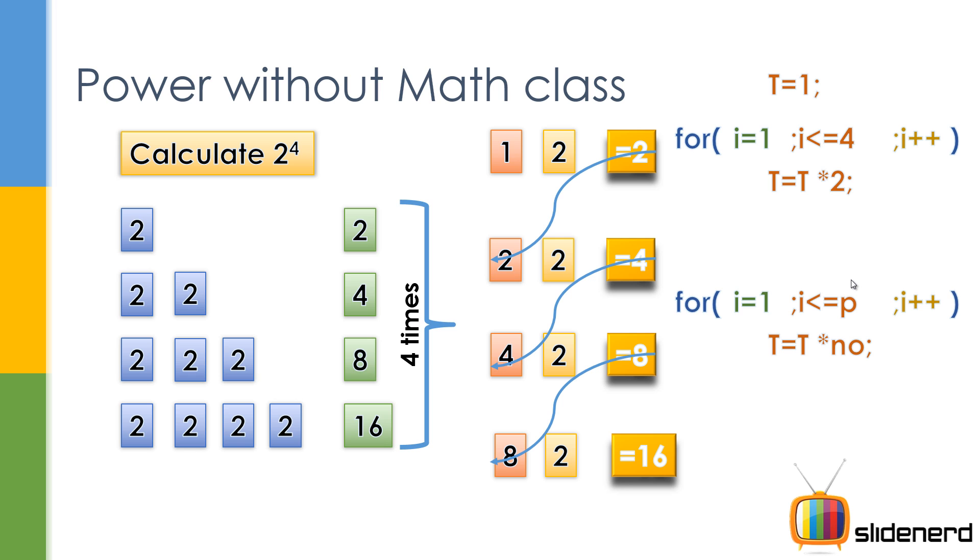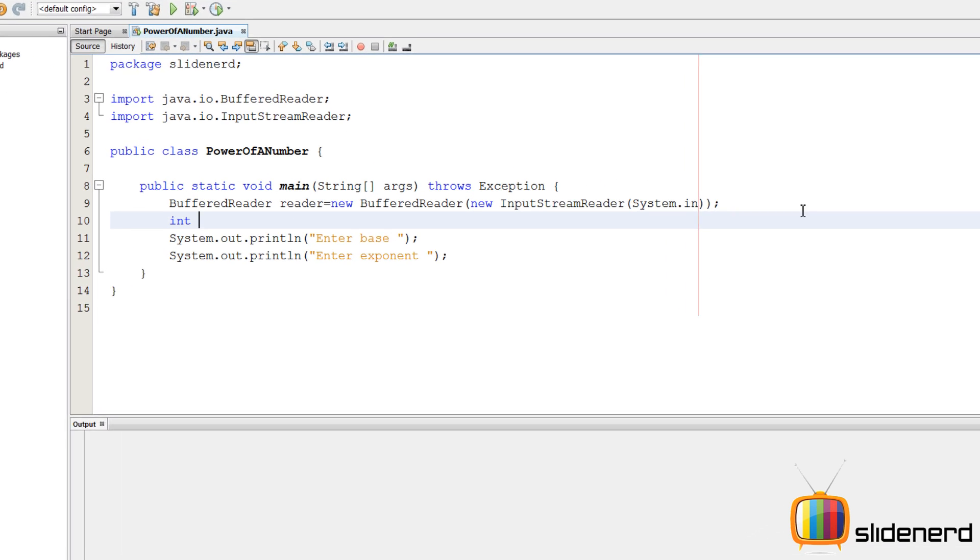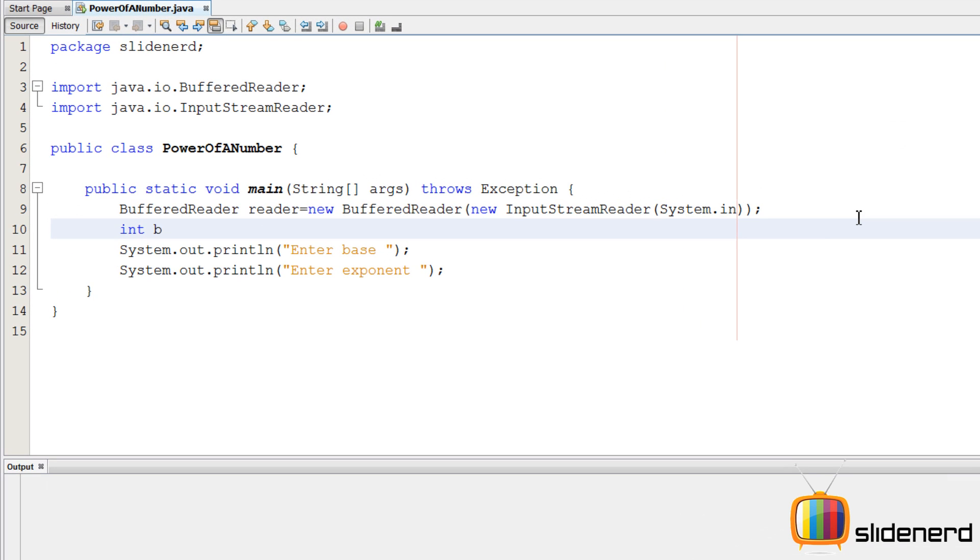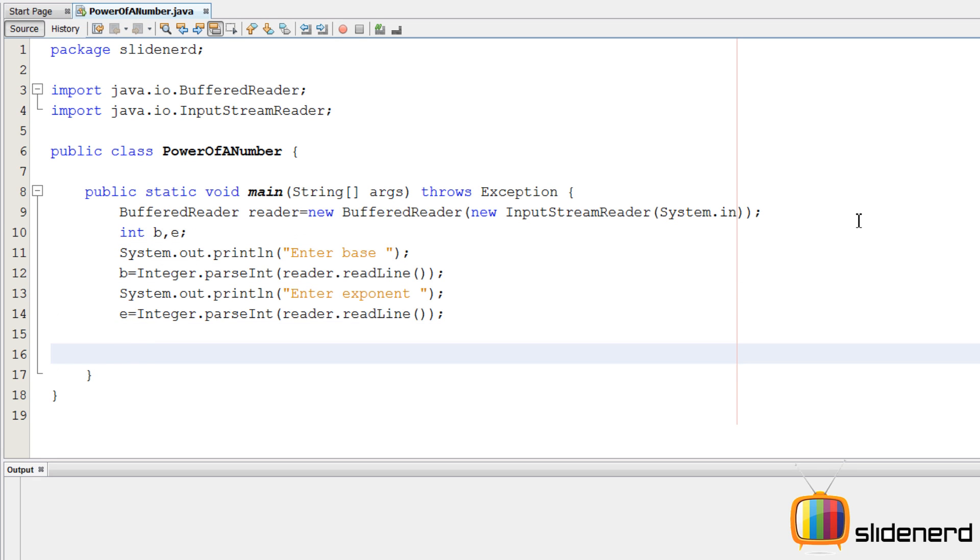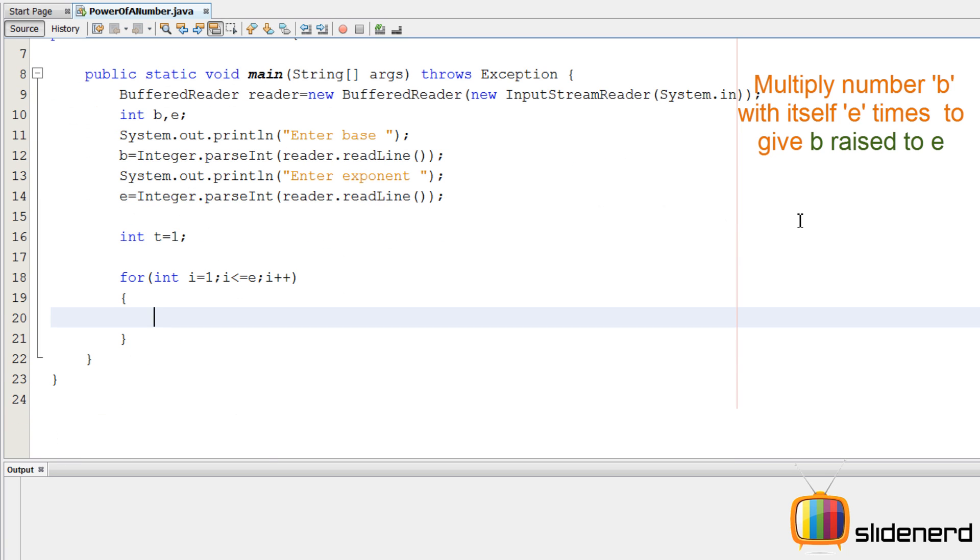So now with NetBeans, I have an empty project with a buffered reader for taking input. You guys are definitely familiar with how buffered reader works. I declare two variables, b and e, for taking the base and the exponent. Then I say t equals to 1, as per the logic we discussed. Then I have a for loop which starts at i equals to 1, goes all the way up to the exponent, which is e. You can start from 0 to less than e, or 1 to less than equals to e, it's your choice.